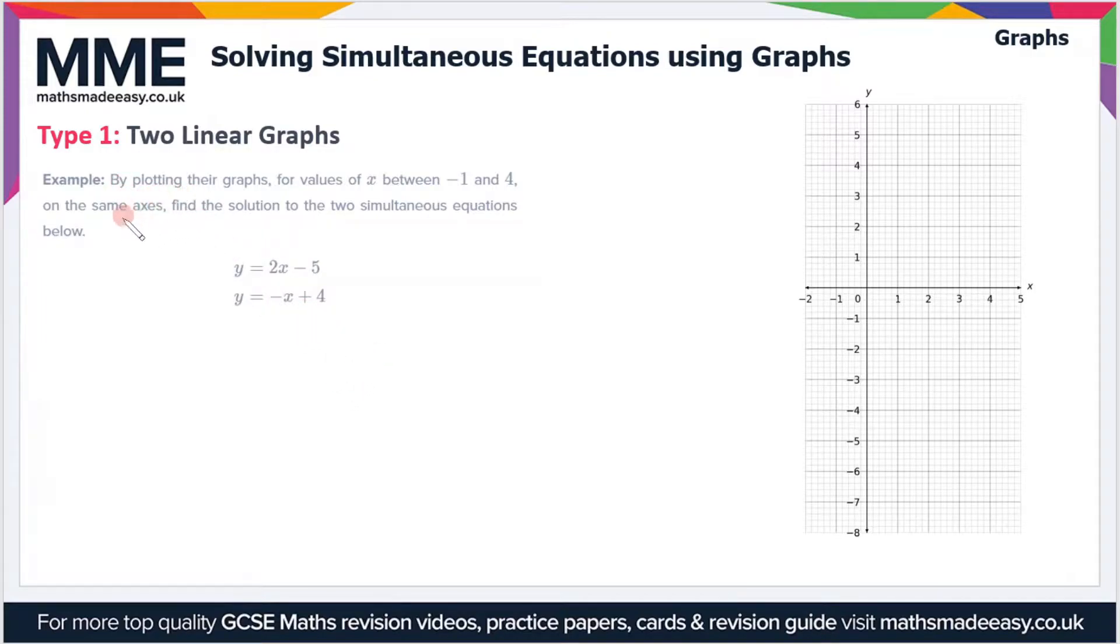We have the example: by plotting their graphs for values of x between minus 1 and 4 on the same axes, find the solution to the two simultaneous equations below. So the equations are y equals 2x minus 5 and y equals minus x plus 4.